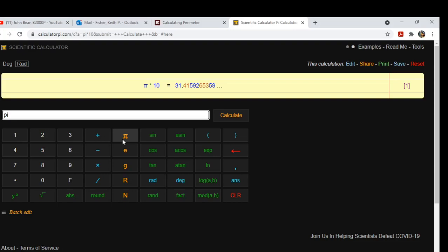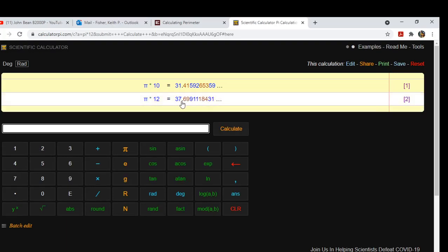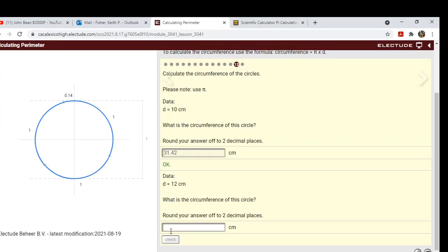Pi times 12 and calculate, and we have 37.699. So we come back here.